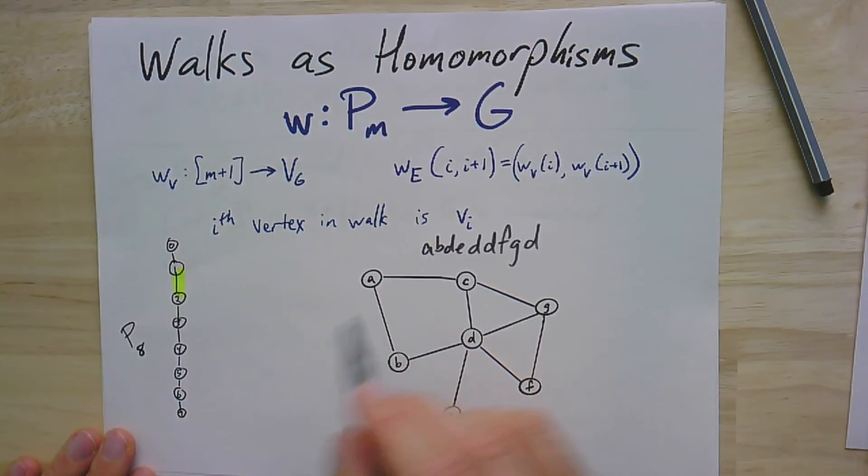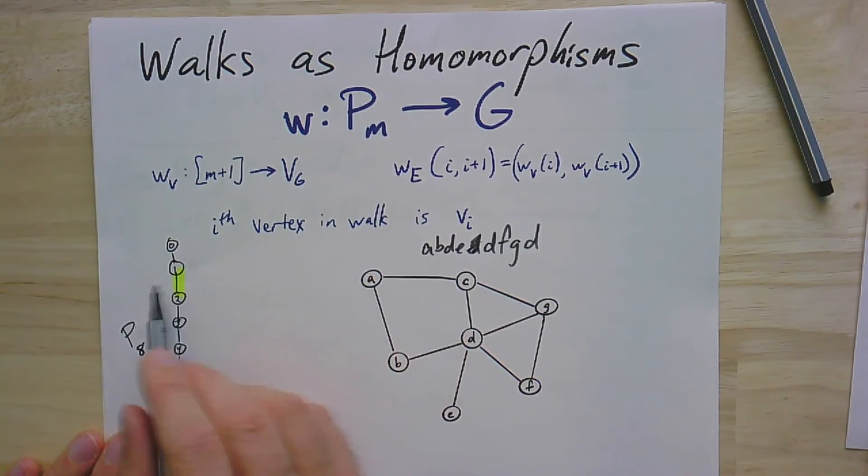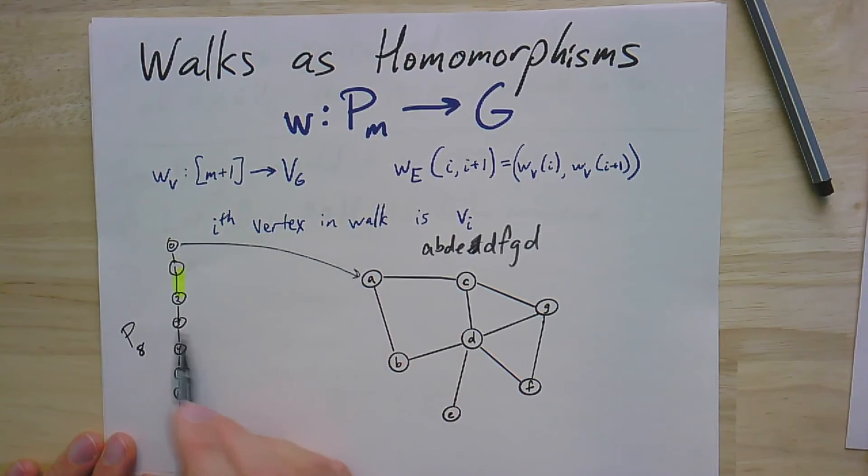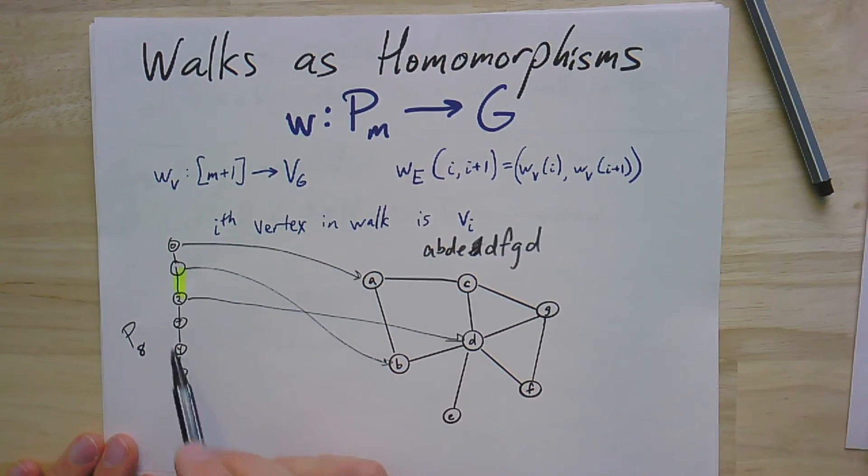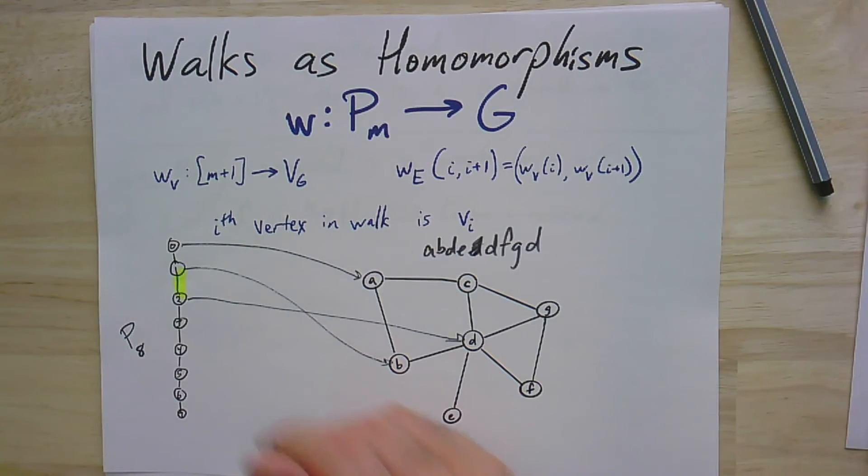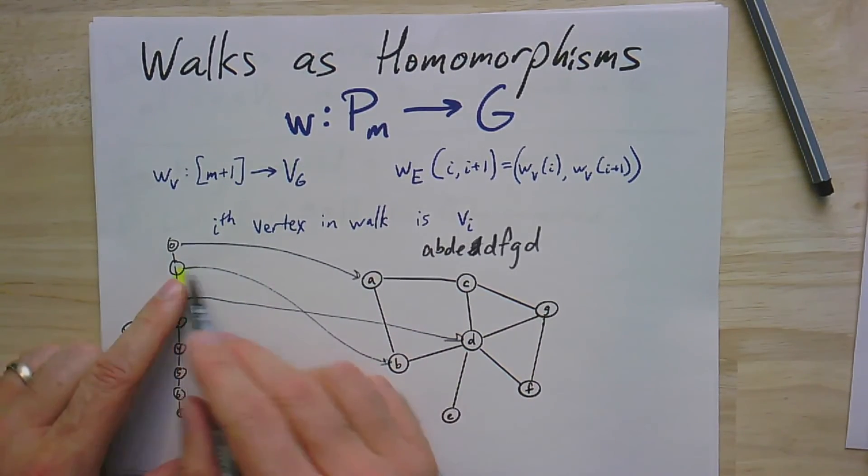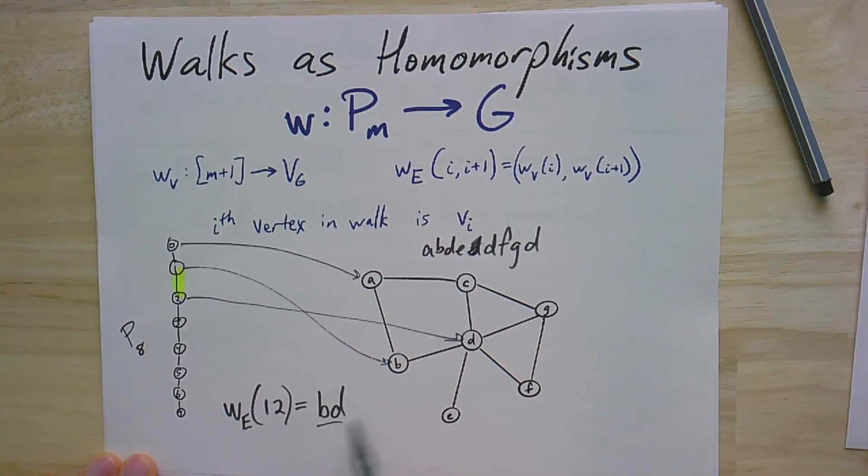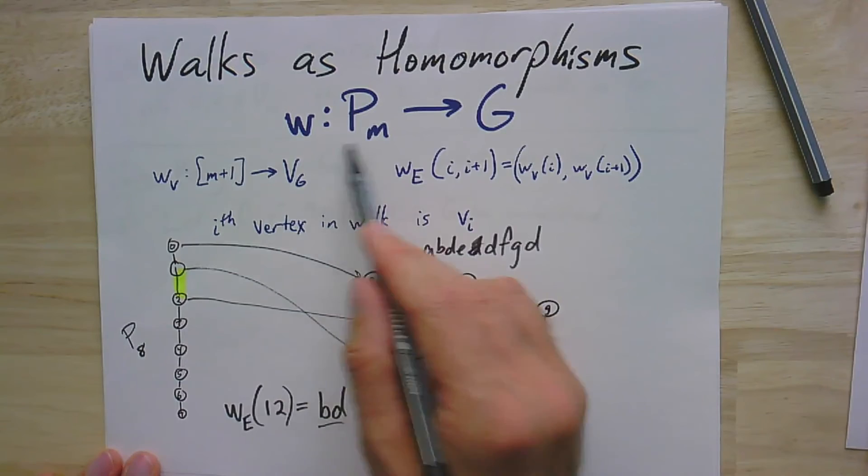There we go. I think that was our sequence. And so that means zero is going to map to A. I won't draw all the lines because it will get messy in a hurry. One maps to B. Two maps to D. And so if I looked at this particular edge one, two, we would see that edge one, two maps to one went to B, two went to D. So that's B, D. And this edge really is an edge in the graph. So this extra condition that we usually put on the vertices in the walk, the adjacent vertices in the walk have to be edges in the graph, is already encoded in our definition of a homomorphism.